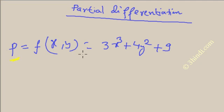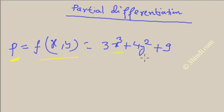Suppose p is a function of x and y. p is not dependent on x only but it is also dependent on y. So there are two variables in this function. So how can you differentiate it?